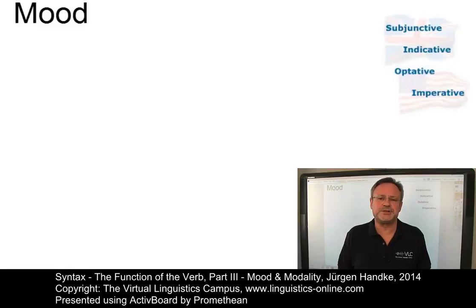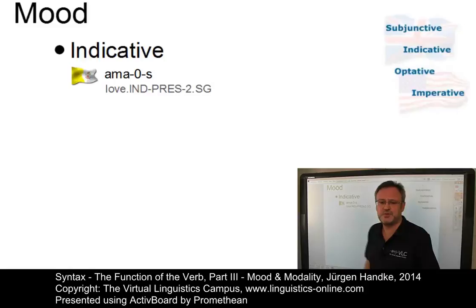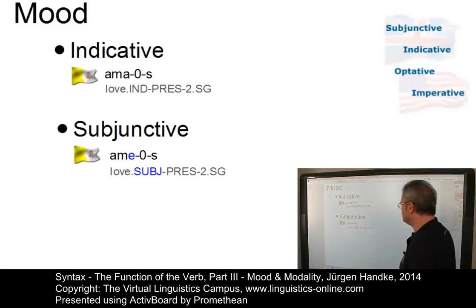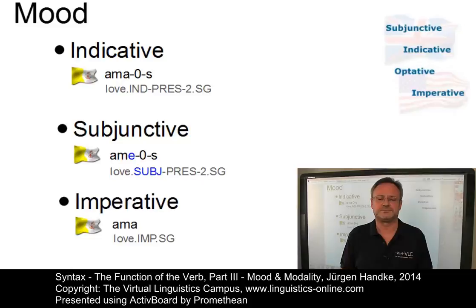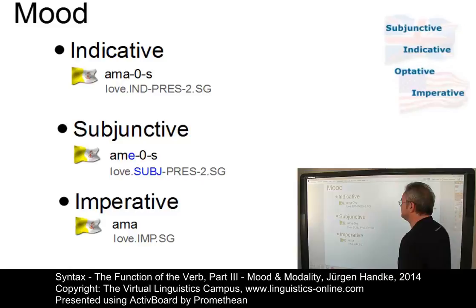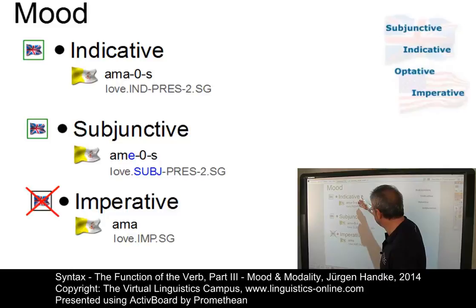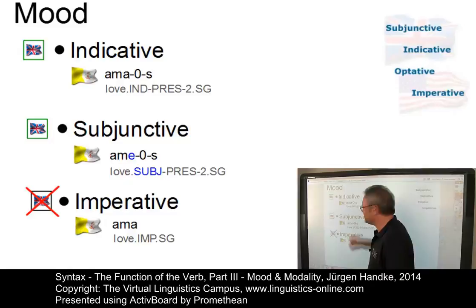The term mood is traditionally restricted to a category expressed in verbal morphology. In Latin, for example, we have three moods: the indicative mood (amas, 'you love'), the subjunctive mood (ames, 'you may love'), and the imperative mood (ama, 'love'). However, the category mood is not found in all languages. In English, only a rudimentary system of mood is left: the indicative mood, normally expressed by the base form of the verb, and the subjunctive mood, which is expressed by a variant of this.